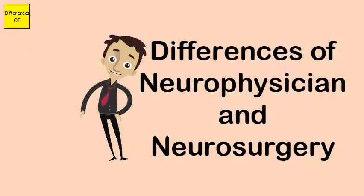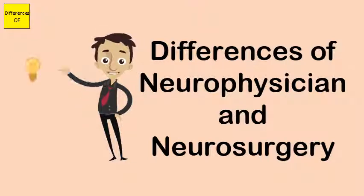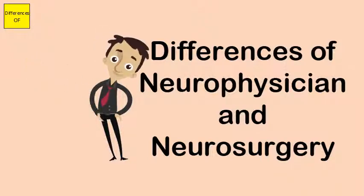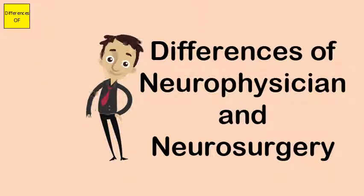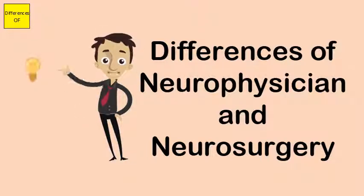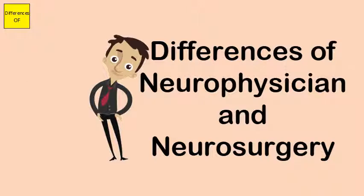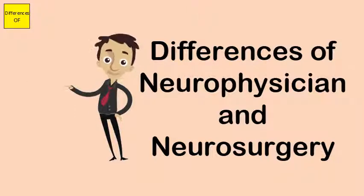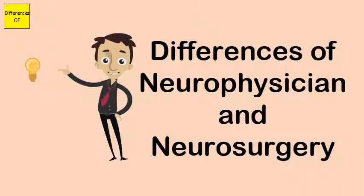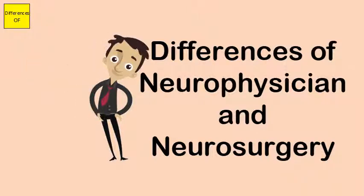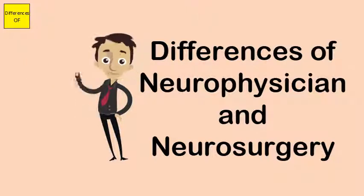Neurophysician has overlapping specialties like pulmonology, cardiology, physical medicine, psychiatry, and neurosurgery. Neurosurgeon has overlapping specialties primarily with neurophysicians and psychiatrists.